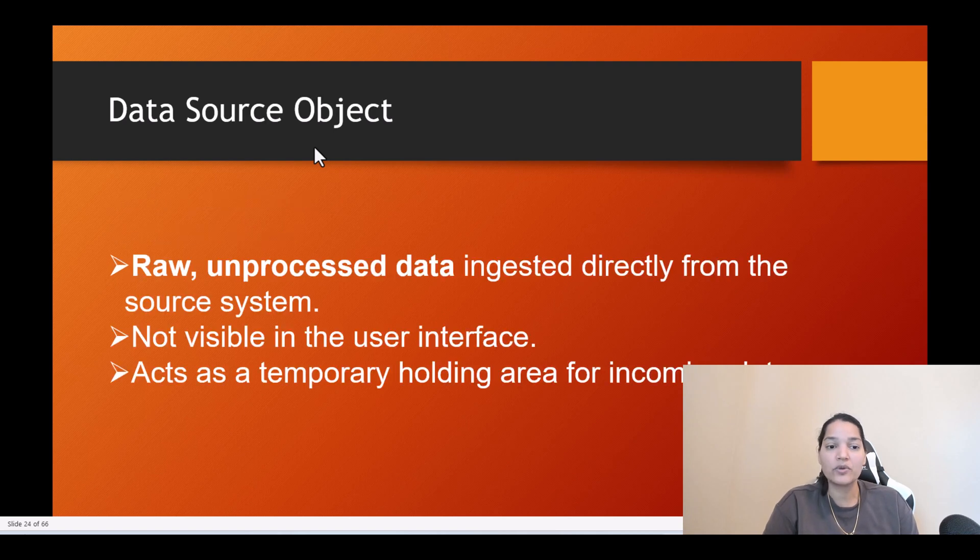Let's start with data source object. Data source object basically contains raw unprocessed data ingested directly from the source system. The data coming from the source system is in a very raw format, it is not processed. That's what's present in the data source object. But you cannot see this in the user interface. You don't have a tab to see the data source object records.